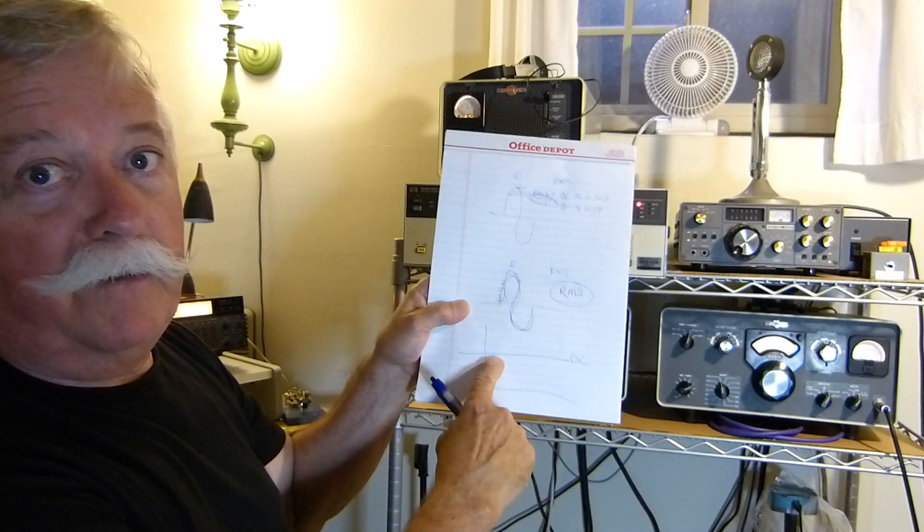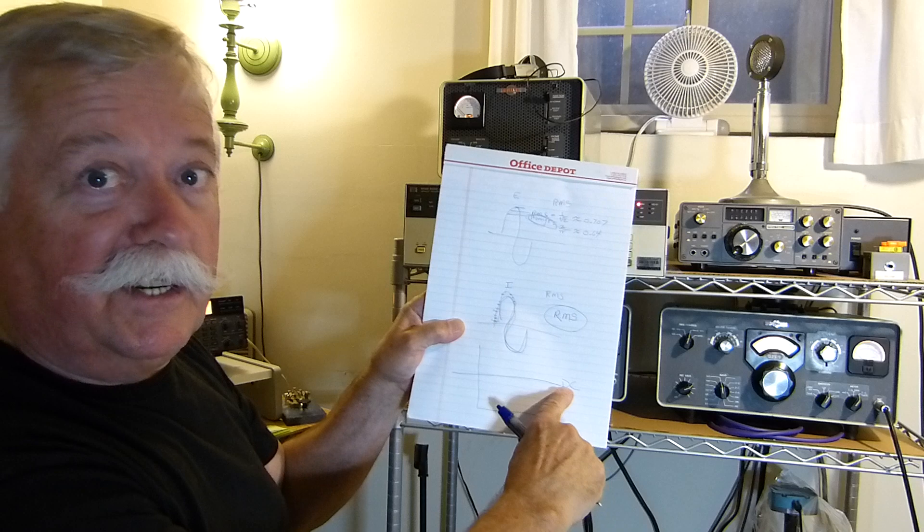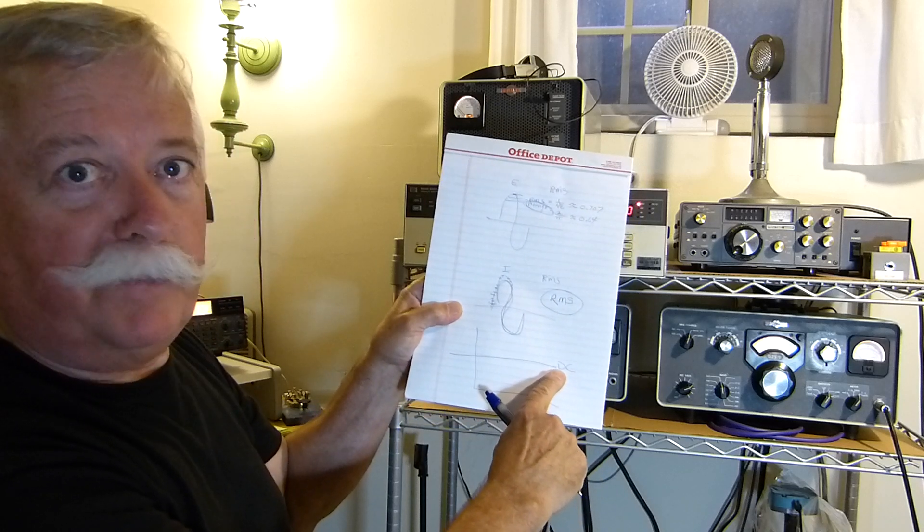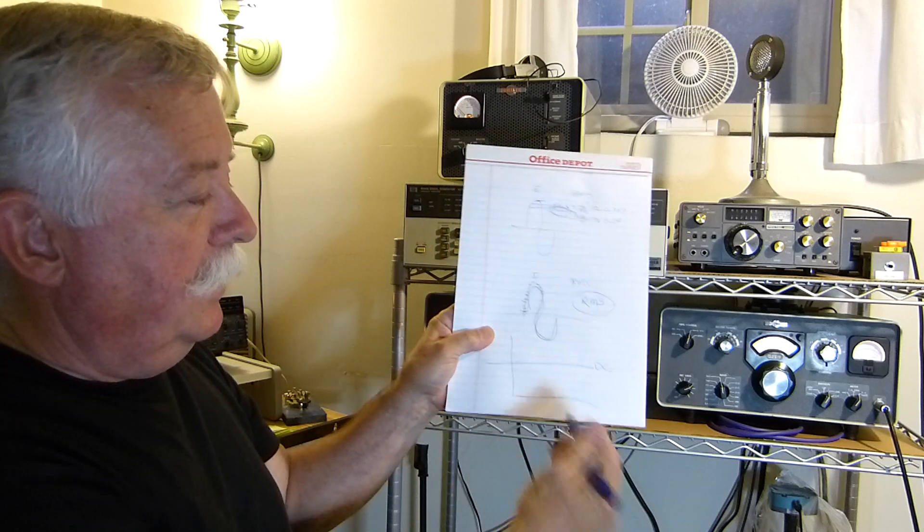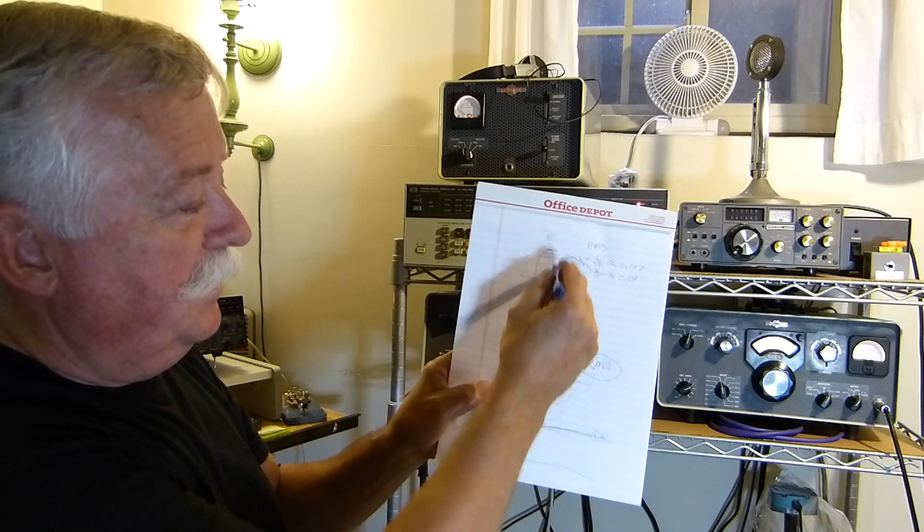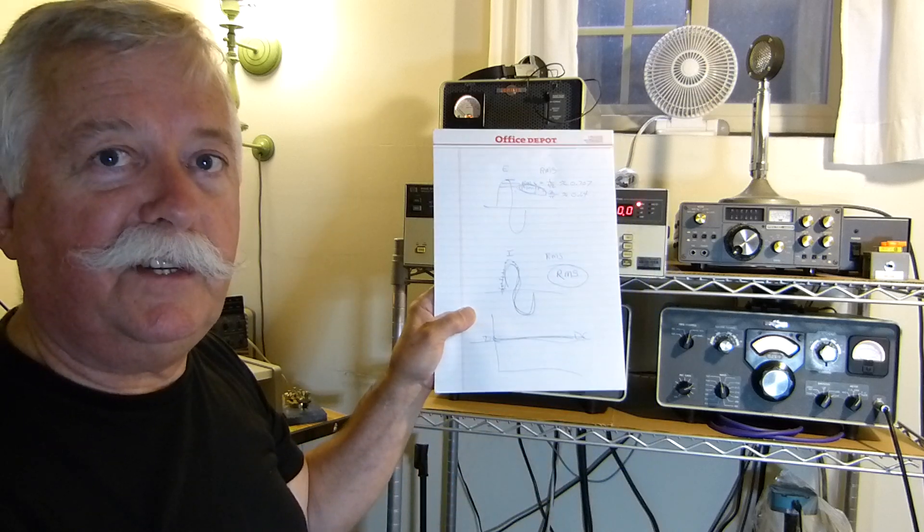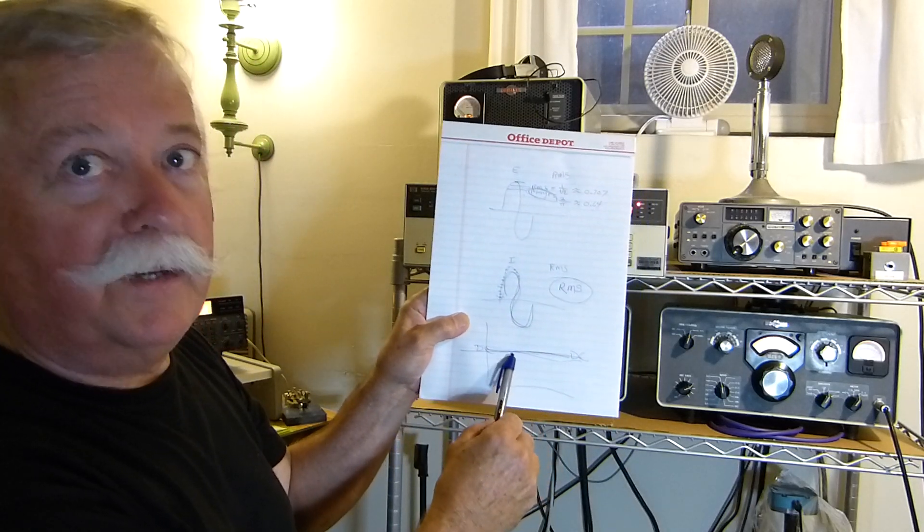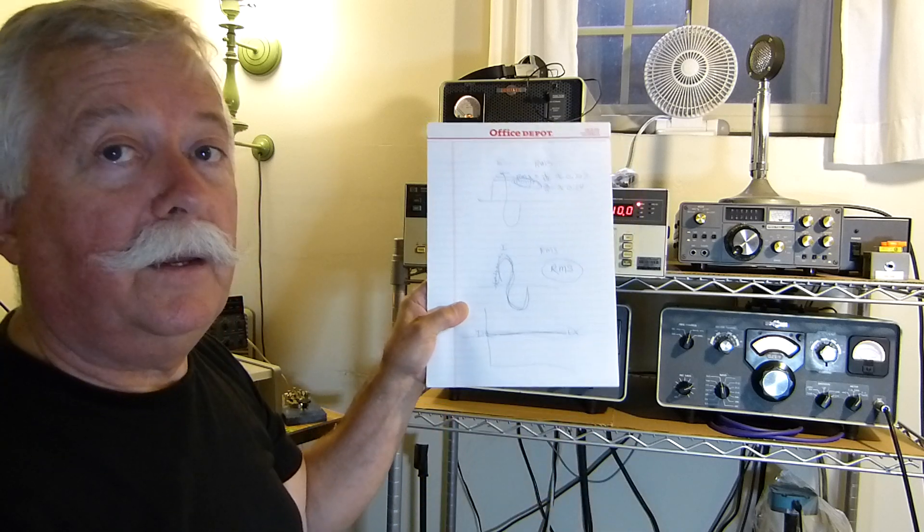We're not getting an RMS value here. What we're doing is when we multiply an RMS voltage times an RMS current, we're getting a steady state, equivalent DC heating level. A continuous power. You can call it average if you want. I don't even like the word average. It's a continuous power level that's equivalent. This is equivalent to DC voltage right here. DC voltage times DC current. These RMS values give you that. This is not an RMS value because it is not varying. It's just straight across.